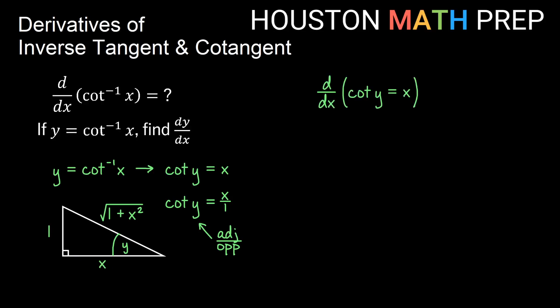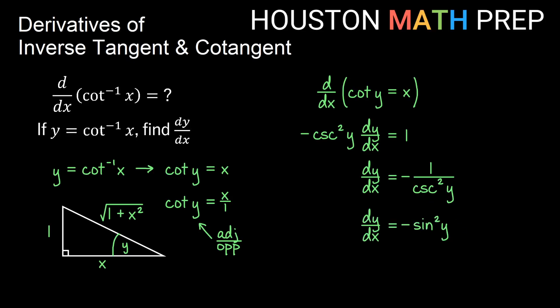Going to the derivative part, the derivative with respect to x of cotangent y equals x gives us negative cosecant squared y, and the chain rule gives us times dy/dx. The derivative of x on the right is again 1. Dividing both sides by negative cosecant squared y gives us dy/dx by itself. Cosecant of y is the reciprocal of sine of y, so negative 1 over cosecant squared y is the same as negative sine squared y. From our triangle, sine of y is opposite over hypotenuse, which is 1 over the square root of 1 plus x squared. Squaring removes the root, giving us 1 over 1 plus x squared.